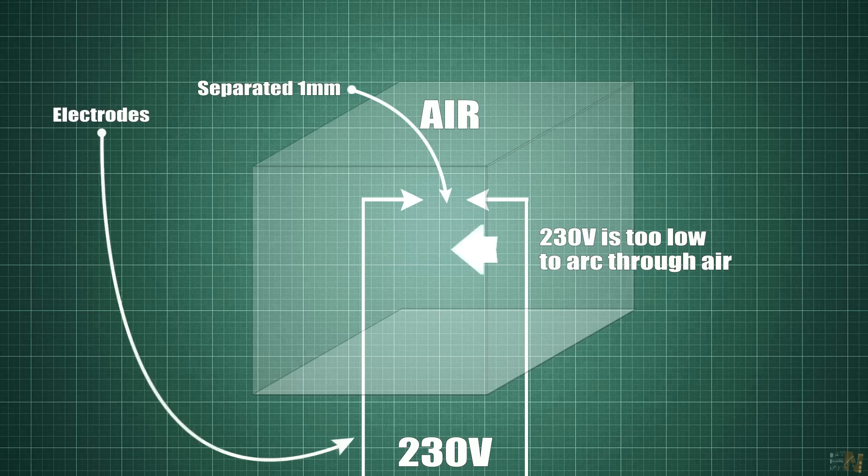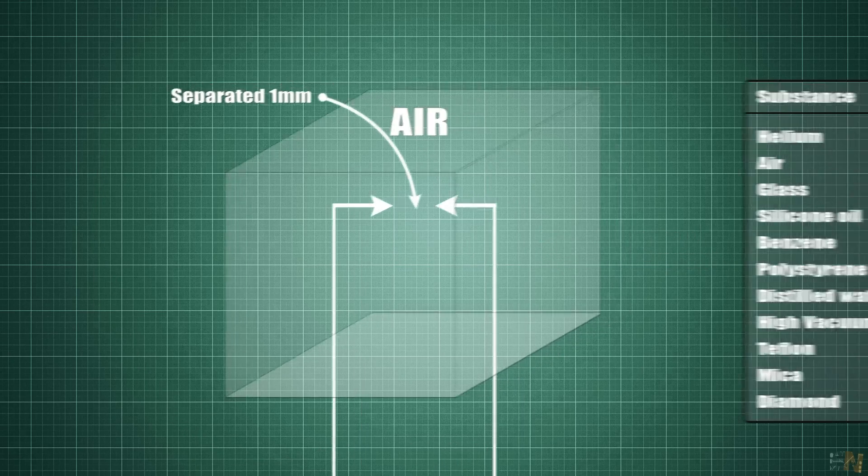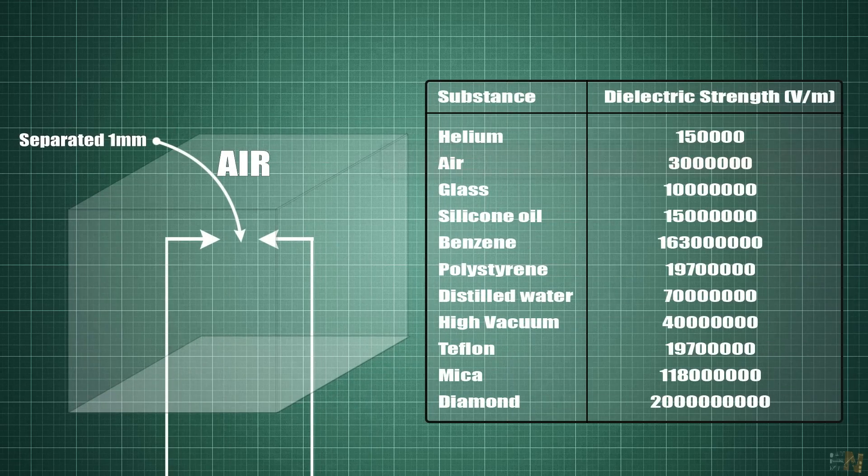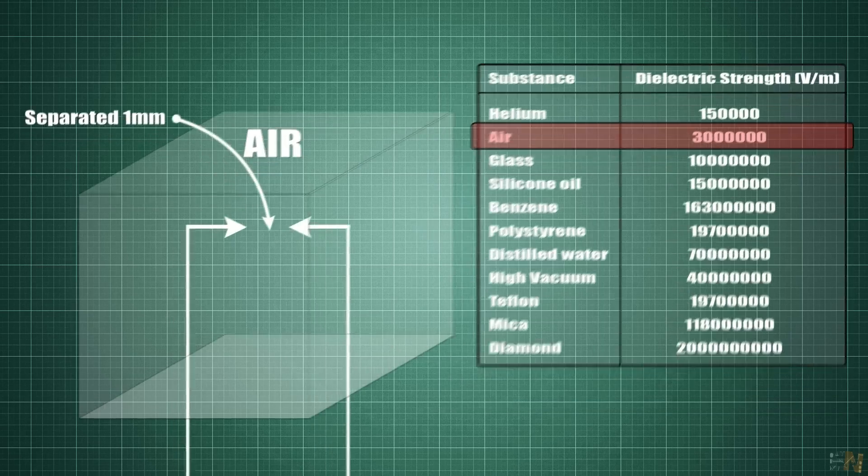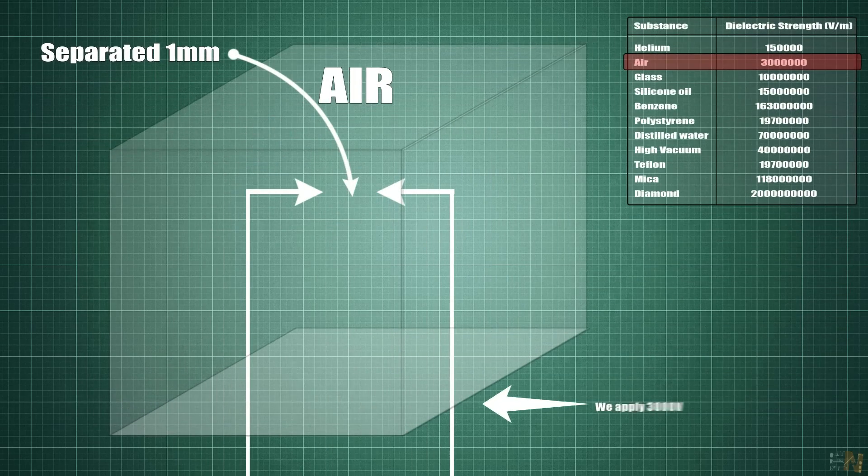It all depends on the voltage value. If we take a look at this table, we can see that we need 3 million volts per meter in order for the air to become conductive. 3 million volts per meter is the same as 3000 volts per millimeter.